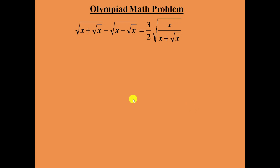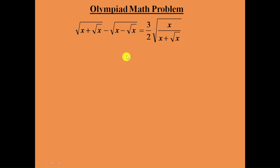Hello everyone. Here we need to find the value of x in the given equation: square root of x plus square root of x minus square root of x, equal to 3/2 into square root of x divided by x plus square root of x.